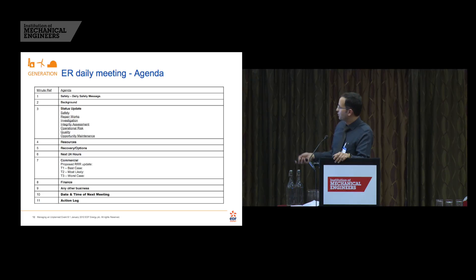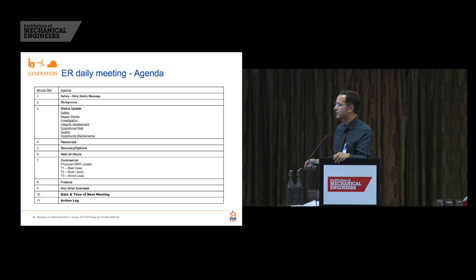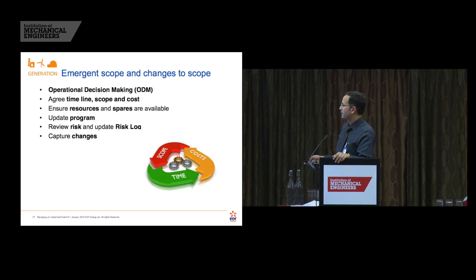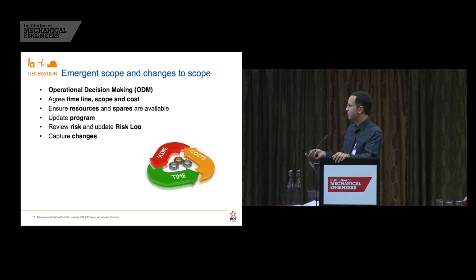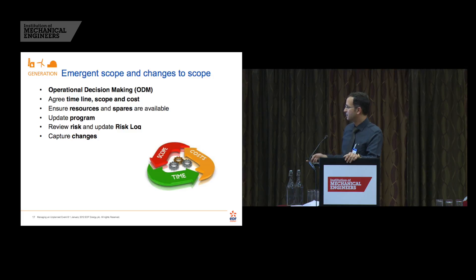The daily meeting covered standard meeting minutes — nothing too strange — just really daily progress. Emergent scope was managed through good and effective change management: ensuring any emergent scope went through operational decision-making, agreeing timeline, scope, and cost before including it in the program, ensuring resources and spares were available, making sure the program was updated with the new work, and reviewing the risk log.